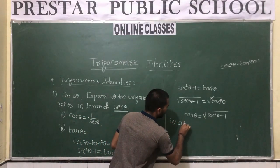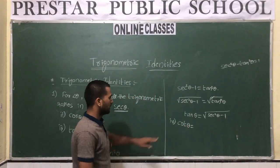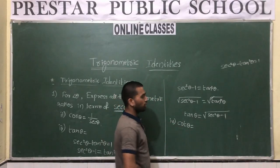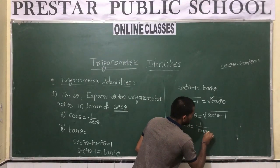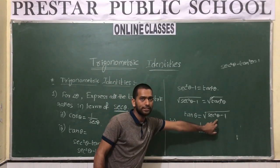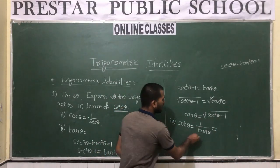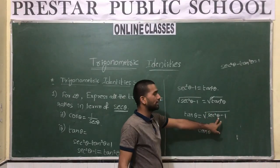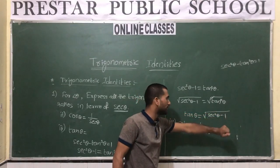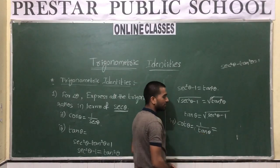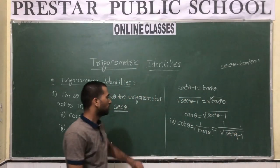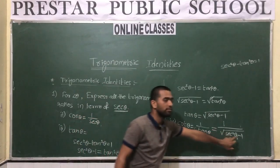The fourth ratio is cotθ. We know that cotθ is the reciprocal of tanθ, so cotθ = 1/tanθ. We have already converted tanθ in terms of secθ: tanθ = √(sec²θ - 1). So cotθ = 1/√(sec²θ - 1).